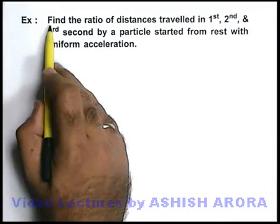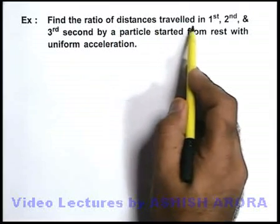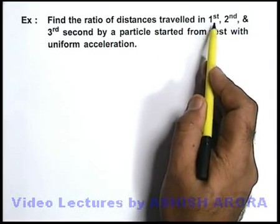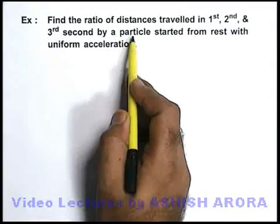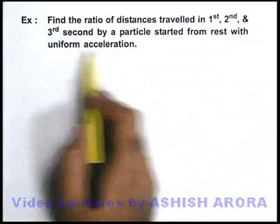In this example we are required to find the ratio of distances travelled in first, second, and third second by a particle started from rest with uniform acceleration.